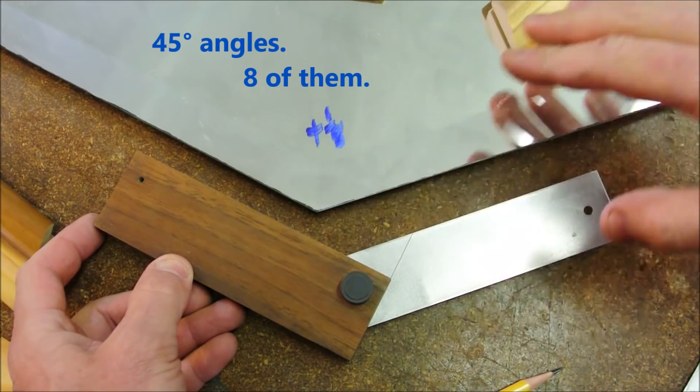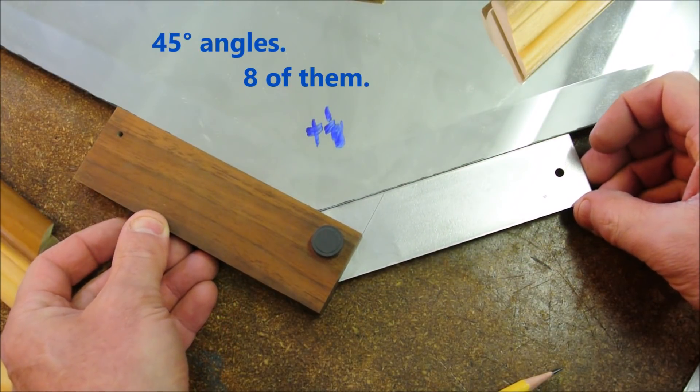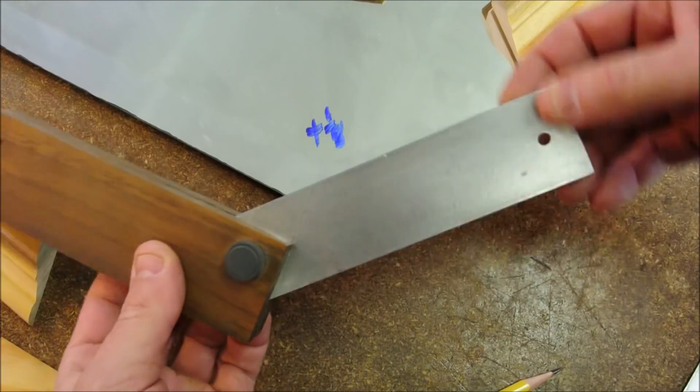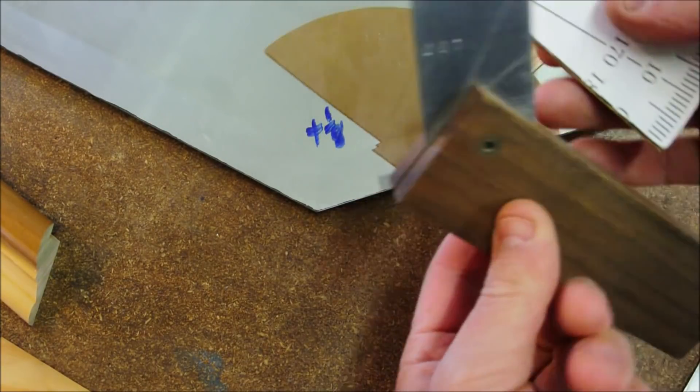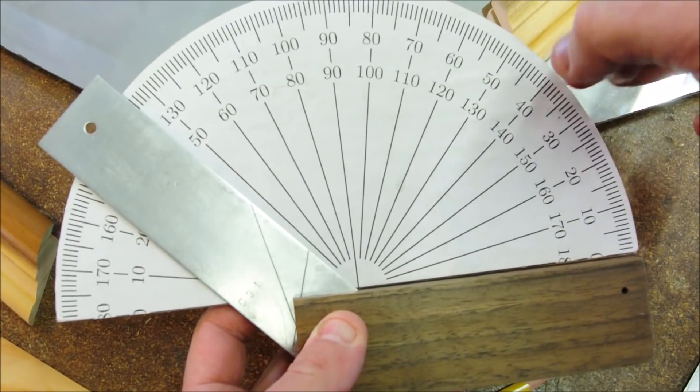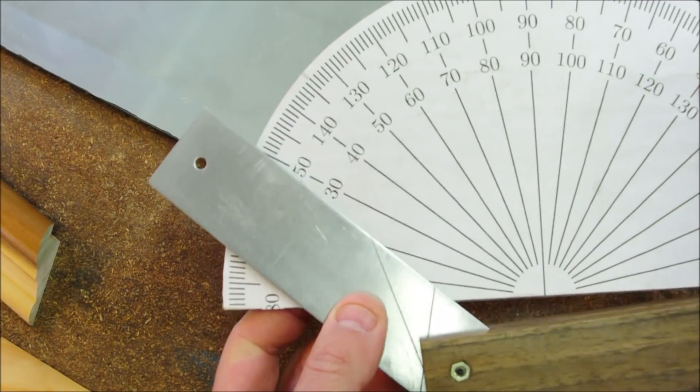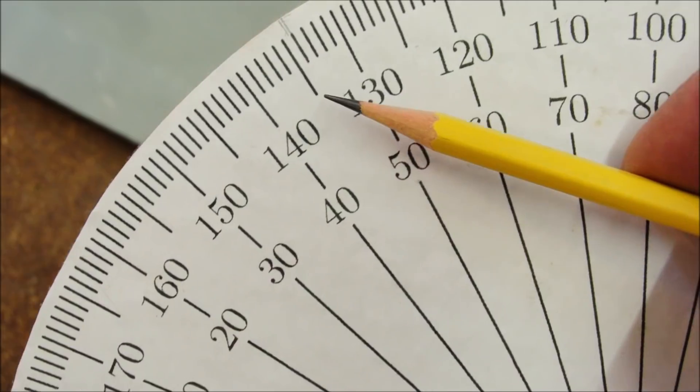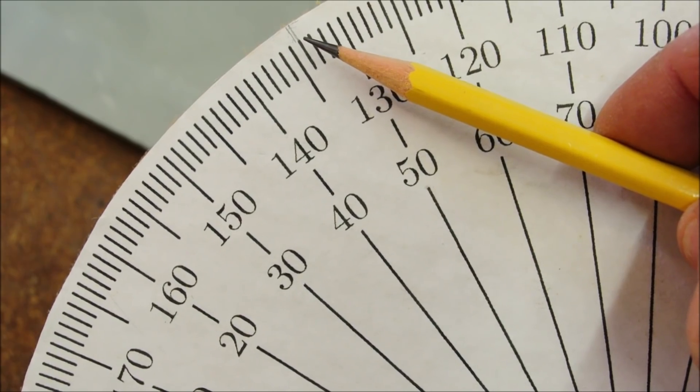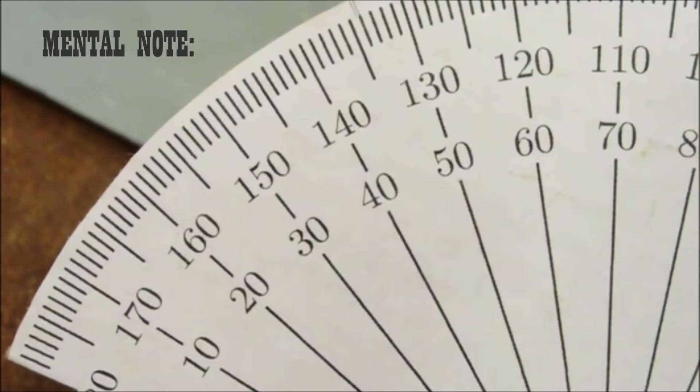And look, an ideal octagonal frame would have 22 and a half degree angles everywhere. But this one does not, because it's a real world example. So take this, apply it to the protractor, which is just cardboard and printed paper. Make a mark, and look what we have there. It's right around 46 degrees away from zero. Mental note, half of 46 degrees is 23 degrees. Hold on to that thought for a moment.